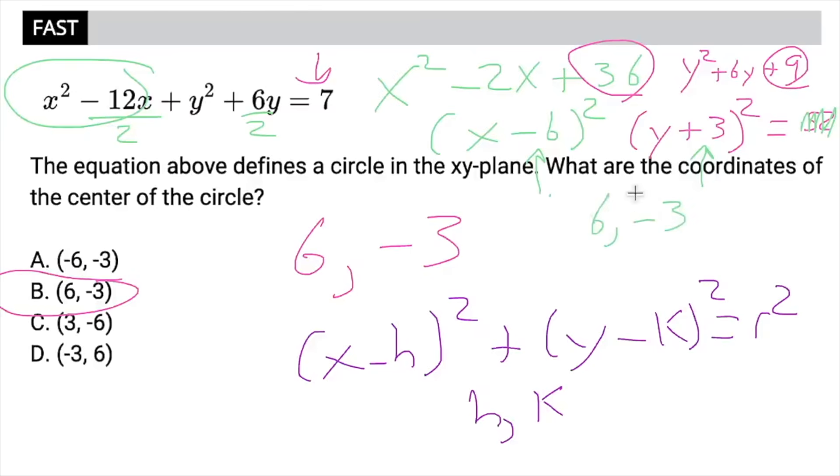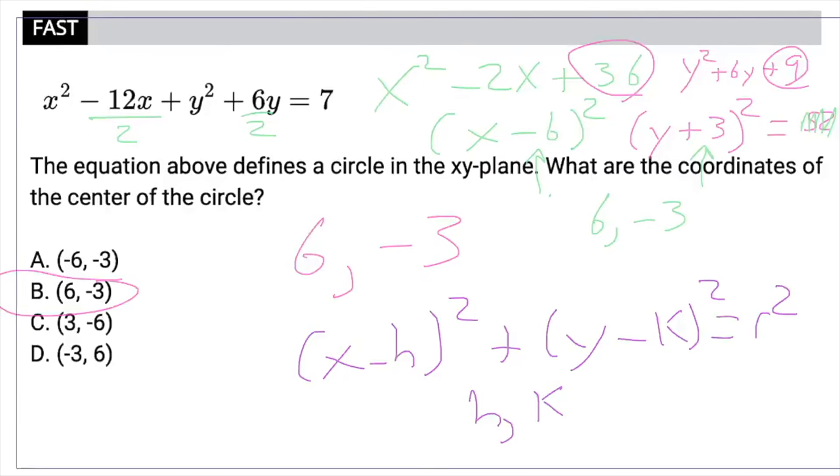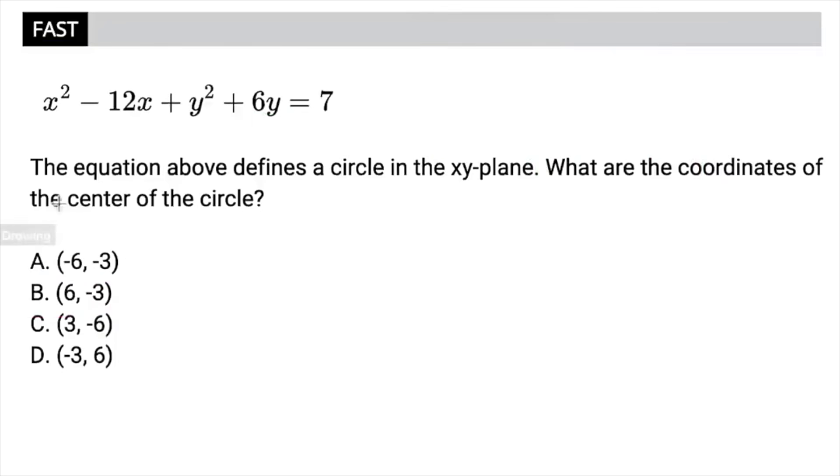But I skipped all of that because in my head, when I see this question, I know that my coefficient divided by 2 is automatically going to end up in the parentheses there. So the shortcut for this, with all that in mind, the shortcut is if they're asking about the center and it's in this form, you just take the opposite of your coefficients divided by 2. So since this is negative 12, it becomes positive 6, negative divided by 2. Since this is positive 6, it becomes negative 3, negative divided by 2. And that's the shortcut that you can use once you memorize it.